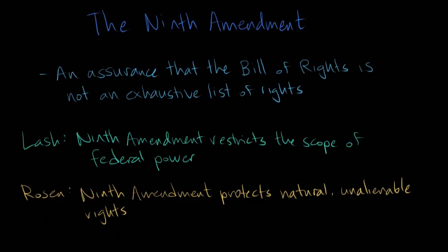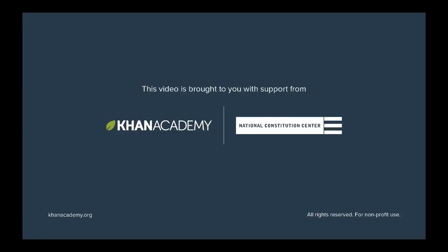We've learned that the Ninth Amendment served as an assurance that the Bill of Rights was not an exhaustive list of the rights retained by the people or the states. But how can you protect unenumerated rights which by their very definition aren't named in the Constitution? Kurt Lash sees the original meaning of the Ninth Amendment as a restriction on federal power. Jeff Rosen reminds us that those rights likely included the same natural unalienable rights enshrined in the Declaration of Independence. To learn more, visit the National Constitution Center's Interactive Constitution and Khan Academy's resources on U.S. government and politics.